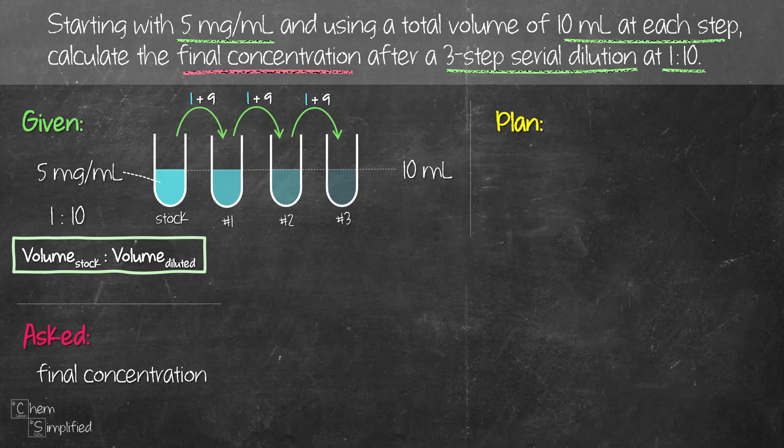We can first figure out what is the total dilution that happened after our three-step serial dilution, and then once we figure out the total dilution, we can use that to figure out what's the final concentration in test tube number 3. So let's figure out the total dilution.